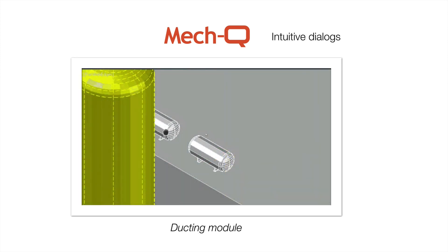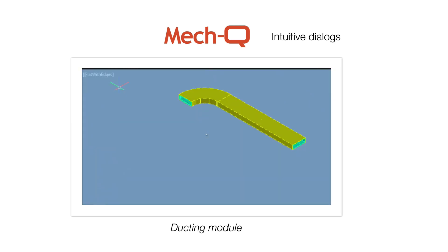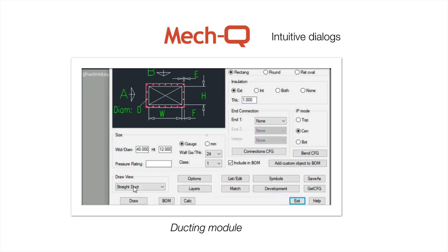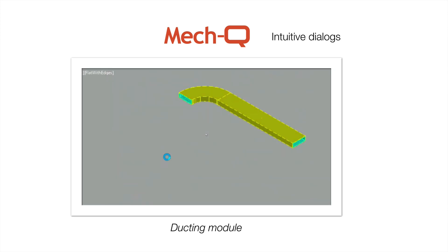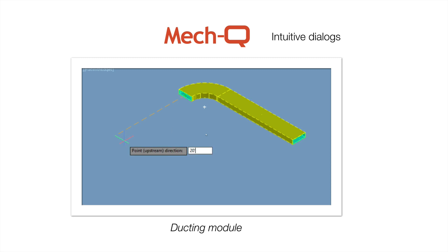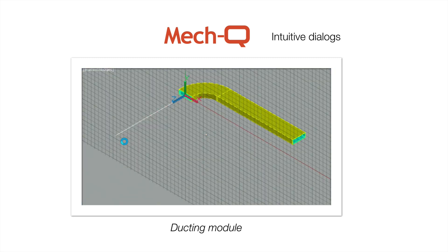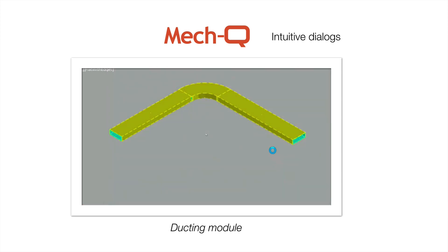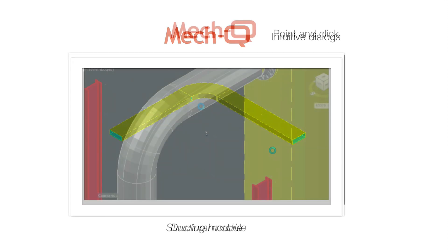Next we'll have a look at the ducting module. Much like the piping module, you'll be working from an intuitive dialog by simply selecting either 2D or 3D and then picking the draw options you require. You can choose either rectangular, round, or oval, plus other various fittings are available such as T's, Y's, and a whole lot more.